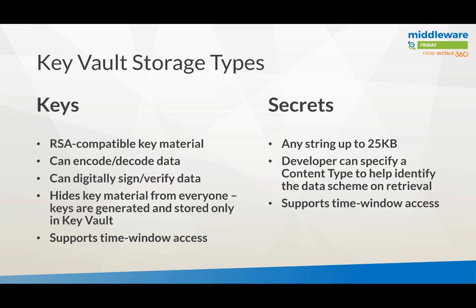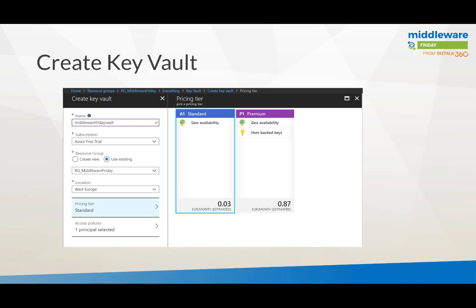Both keys and secrets support time window access. The Key Vault is easily created from the marketplace — you provide a name, subscription, resource group, location, and pricing tier. It's not that costly: about three euro cents per month for the standard tier, and around a euro a month if you want HSM-backed keys. So it's pretty low priced.